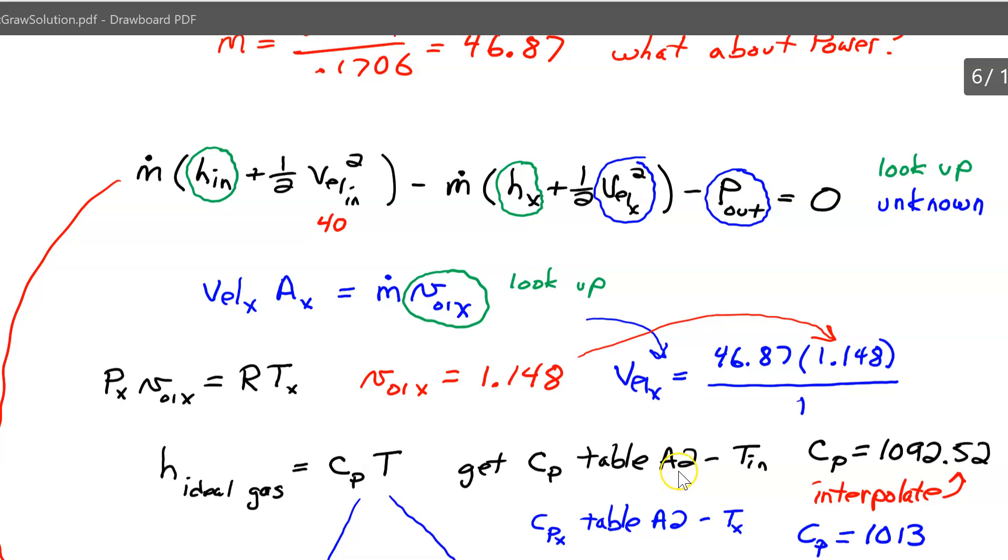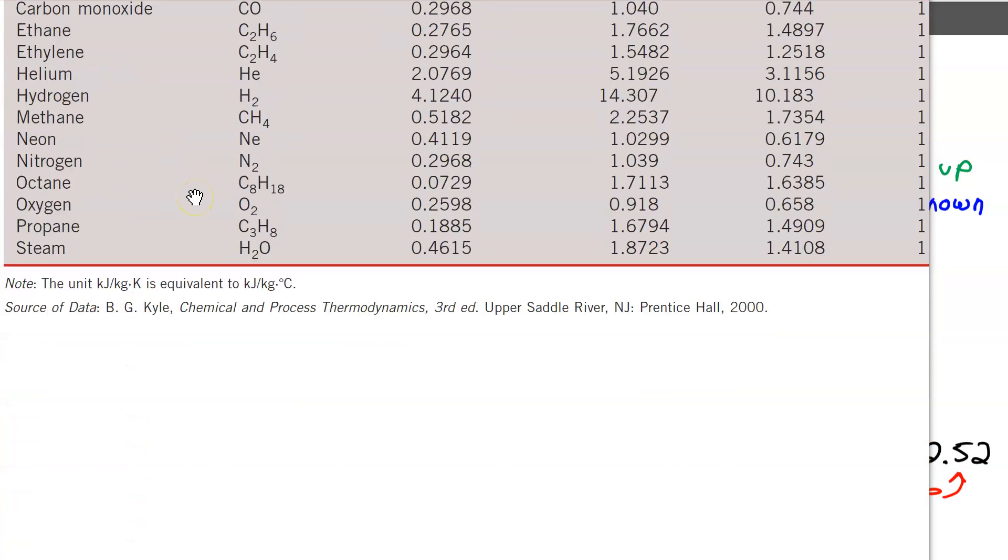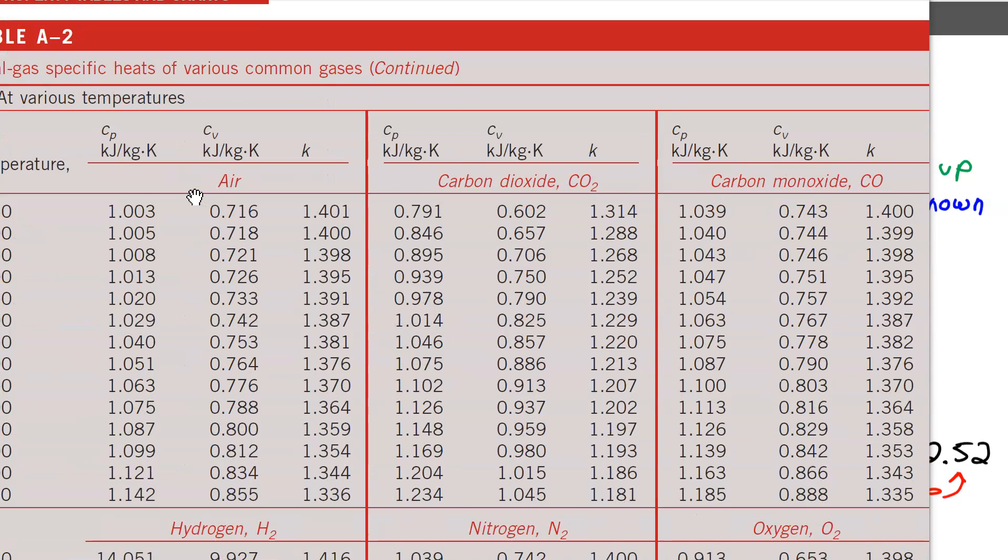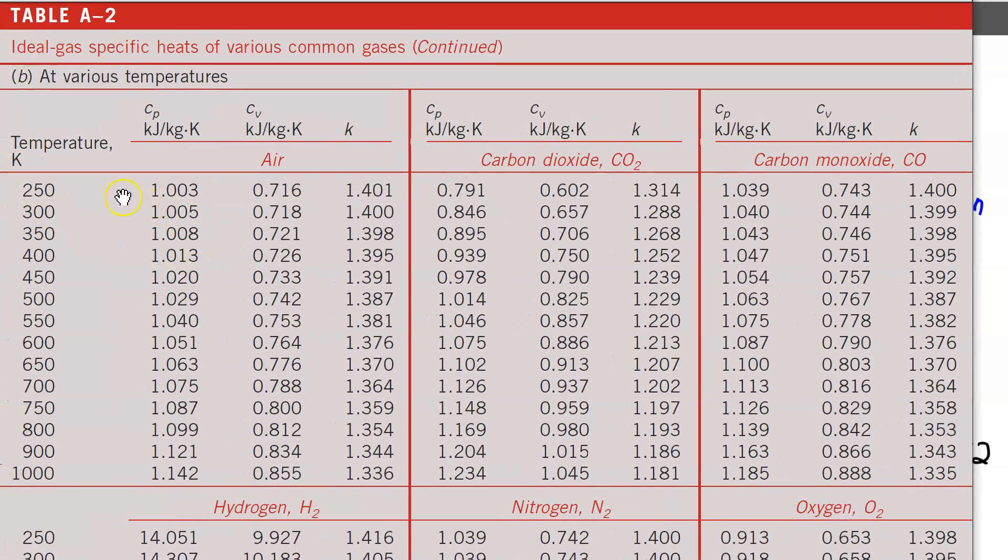And you're going to look up the c_p in a table. The table is going to be A2. And I'm going to use the part of A2 that has the c values as a function of temperature. So I'm going to pause that and bring that table up. Okay, here's the first page of table A2. If you notice, these values are all at 300 Kelvin. But if you scroll to the next continuation of the table, you will find that this one lists the values of the properties at various temperatures.